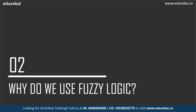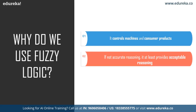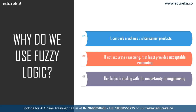Why do we actually use fuzzy logic? Generally it is used for both commercial and practical purposes, such as controlling machines and consumer products. If not accurate reasoning, it at least provides acceptable reasoning. It also helps in dealing with uncertainty in engineering — when you are unsure whether the answer is yes or no, you can find a middle path.